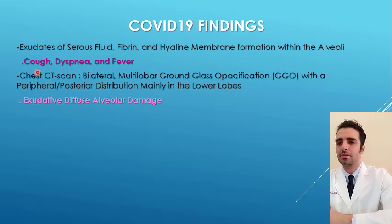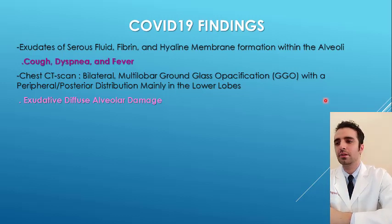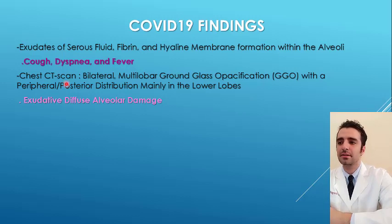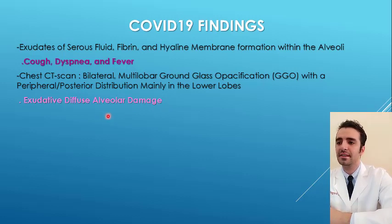Chest CT scans can reveal varying patterns of lung involvement, including bilateral multilobar ground-glass opacification with peripheral or posterior distribution, mainly in the lower lobes. Parenchymal pathologies and alterations in the form of exudative diffuse alveolar damage, or DAD, are also seen with different degrees of extension.